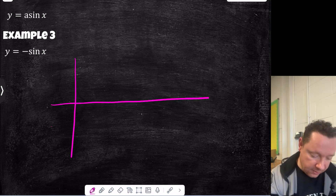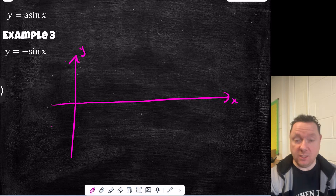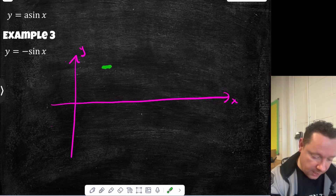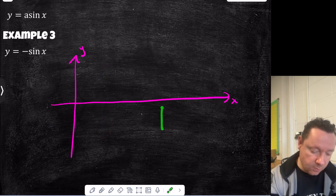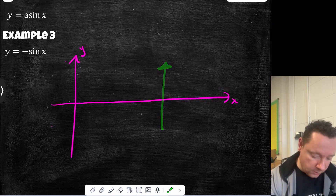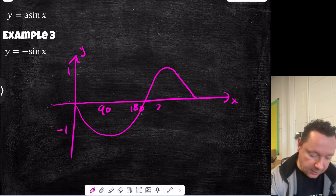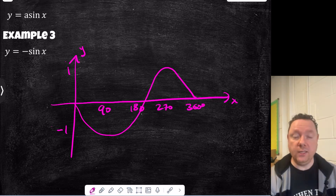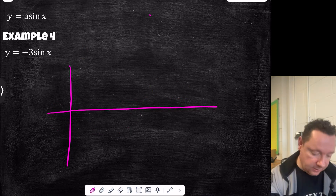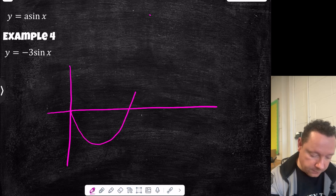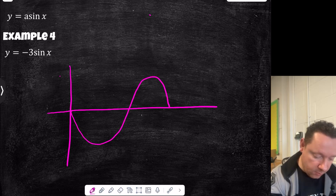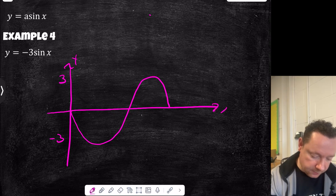What about minus sine x? We still have the sine x graph, but this time our maxes become mins and our mins become maxes — the graph goes upside down. It's been flipped in the x-axis. Similarly, y equals minus 3 sine x would go underneath then up, but instead of going to 1 and minus 1, it would go to 3 and minus 3. That is amplitude in a nutshell, and it applies to cos or sine.